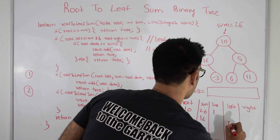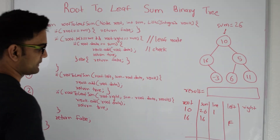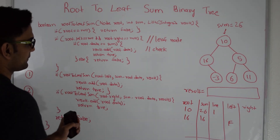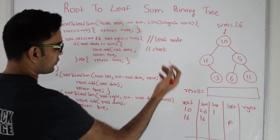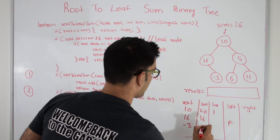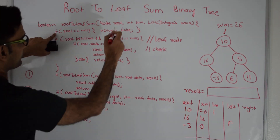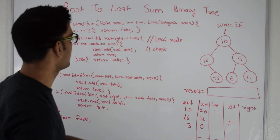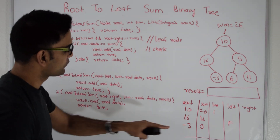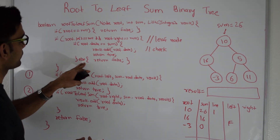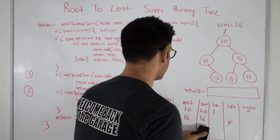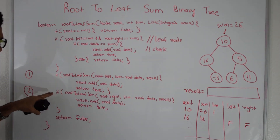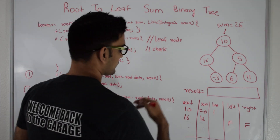Node 16 gets false from its left side. So we try the right side of node 16, passing 0 to node -3. Root is now -3, which is not null and is a leaf node. We check if root data equals sum: -3 is not equal to 0, so we go to the else and return false. Node 16 gets false from both left and right, so it returns false to node 10.